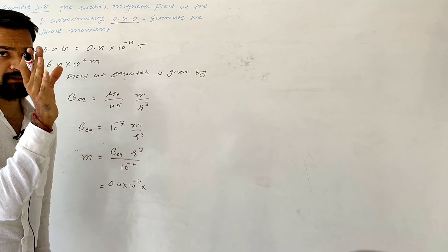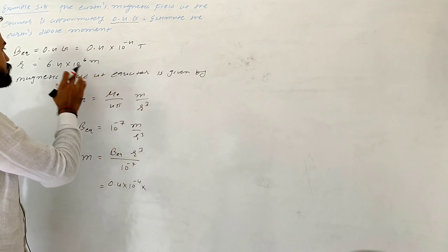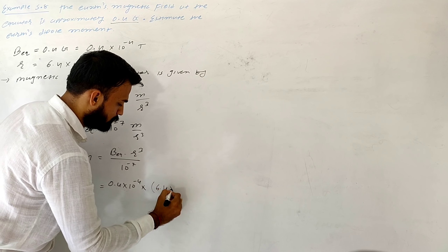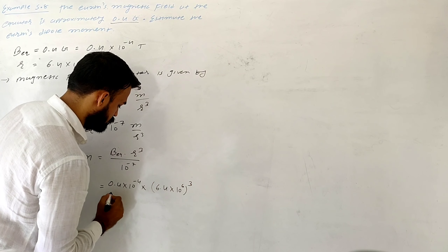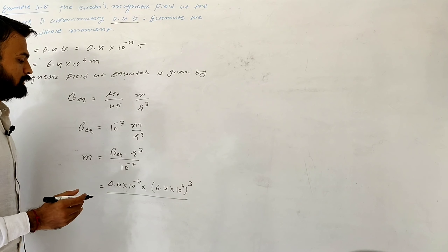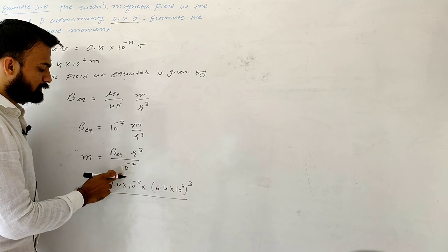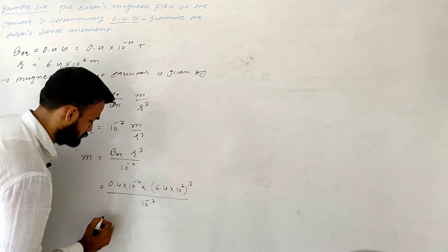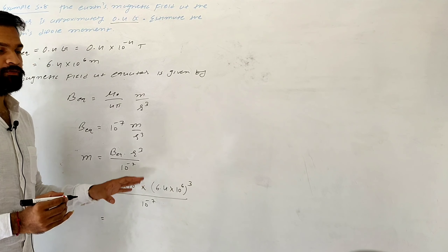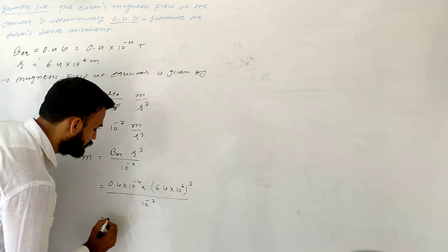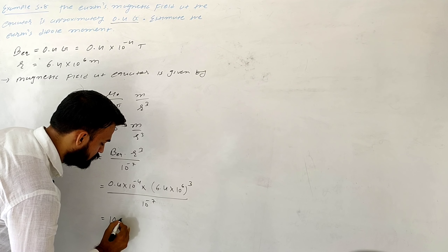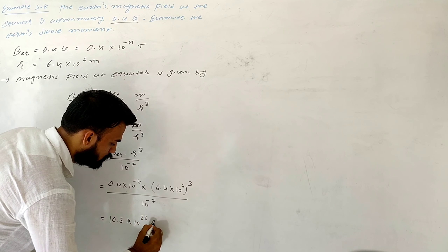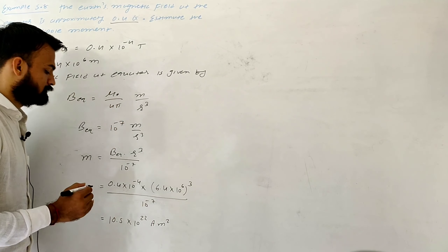So we can say B_eq equals 10 to the minus 7, and r is 6.4 into 10 to the 6, raised to the cube. After simplifying this whole term, you will get the answer 10.5 into 10 to the 22 ampere meter square.